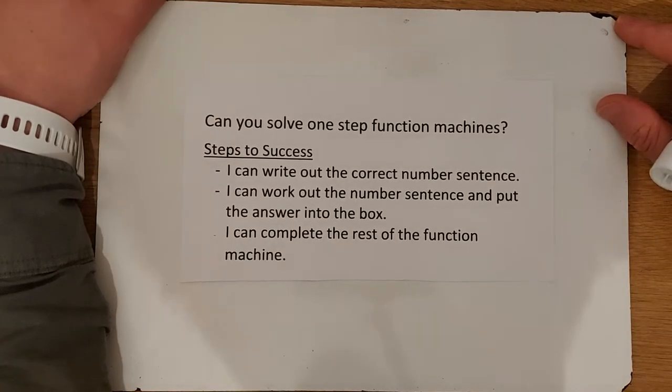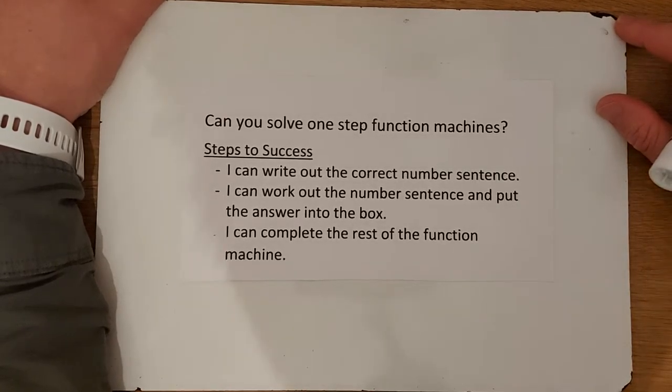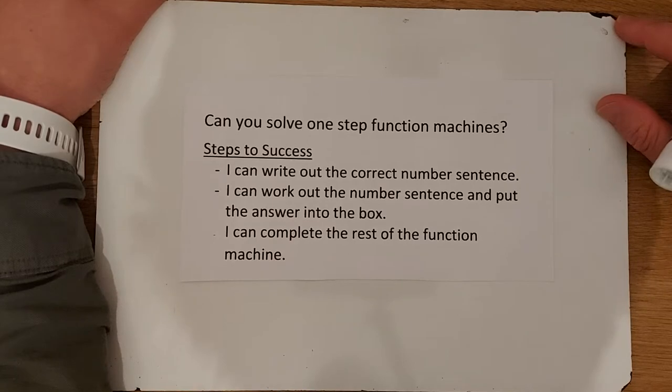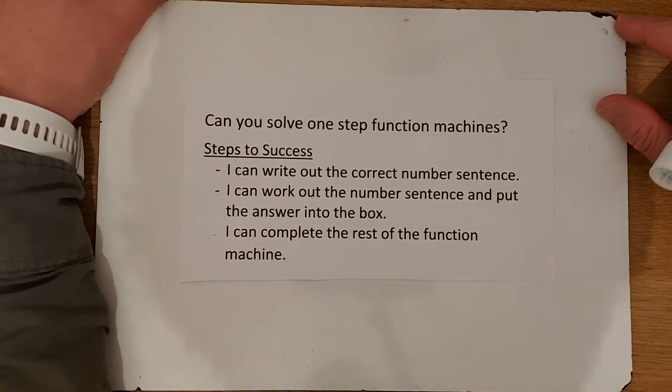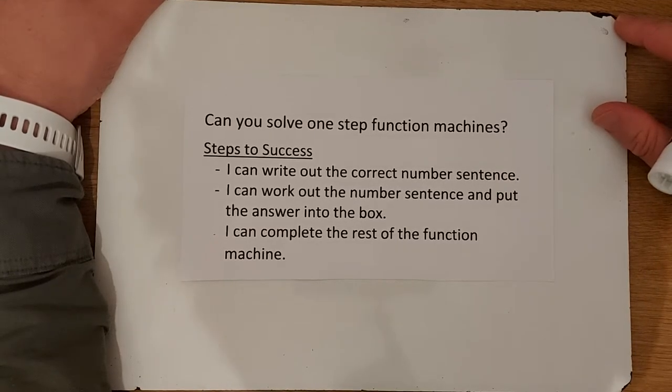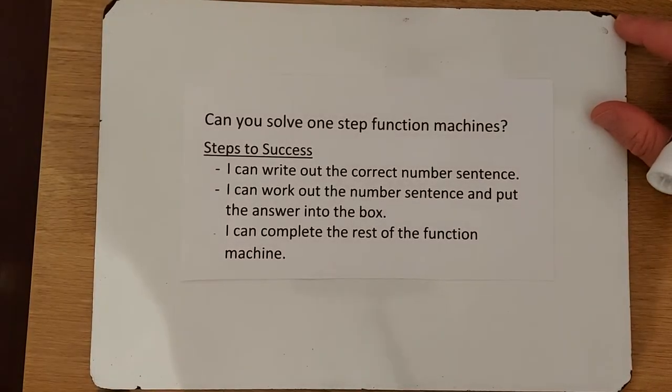They are quite simple and I don't think there's too much to worry about here. Let's quickly run through the steps to success. First, I can write out the correct number sentence. You'll see what the function machine looks like and from that you need to write the correct sum. Then you work it out and put the number in the box. For each function machine there's three questions to do, so the final step to success is to make sure you complete them.